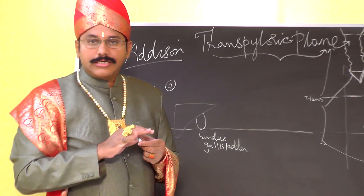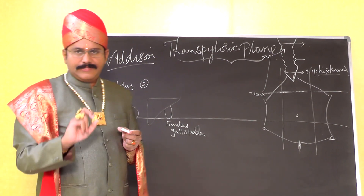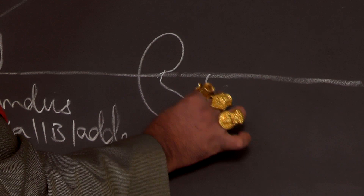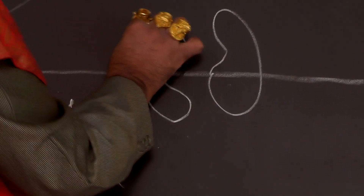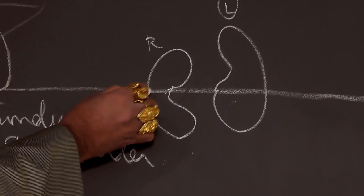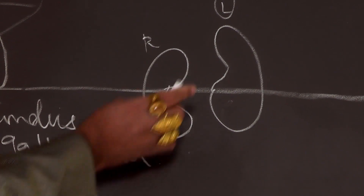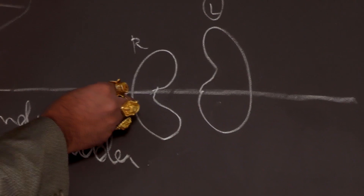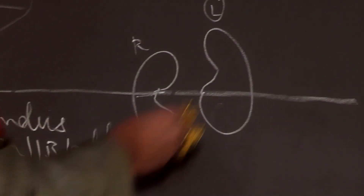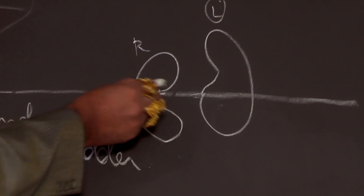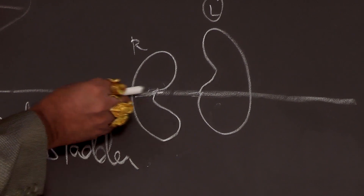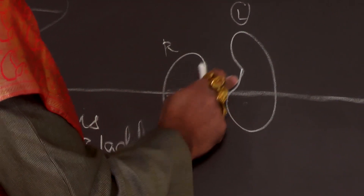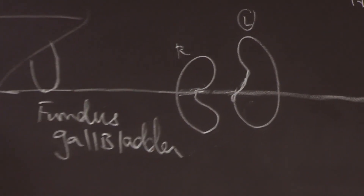The transpyloric plane passes through the hilum of both kidneys. Since the right kidney is at a lower level and the left kidney is at a higher level, the transpyloric plane passes through the upper part of the hilum of the right kidney and through the lower part of the hilum of the left kidney.